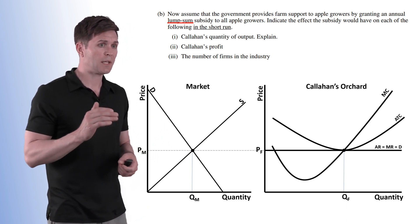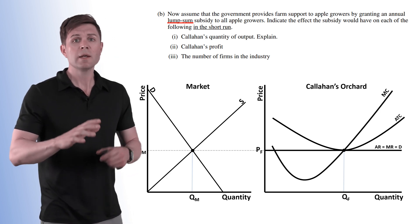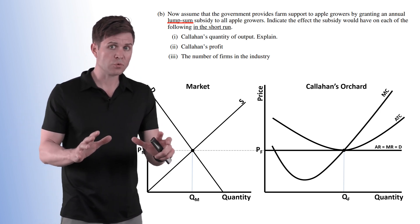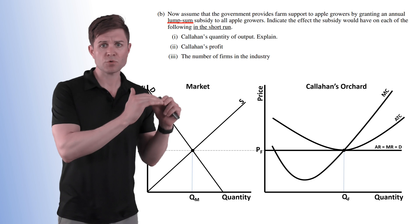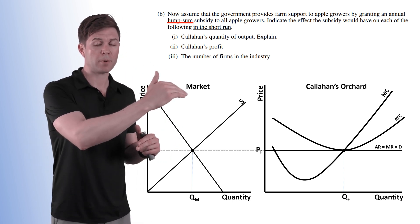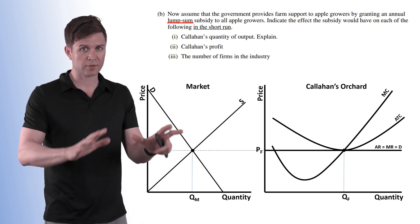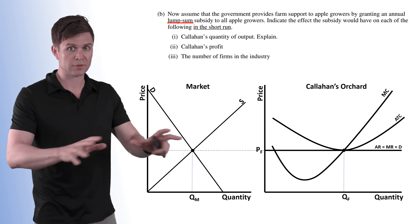Indicate the effect that the subsidy would have on each of the following in the short run. Now all that the question has you do is answer this. It doesn't have you draw the model. You have your model drawn up above. You do not need to shift it. I just have it here for illustrative purposes.